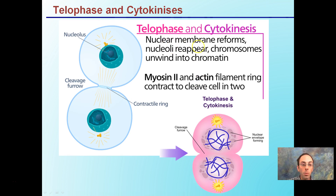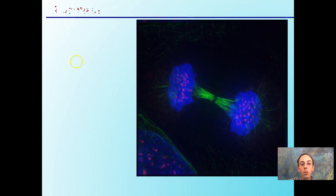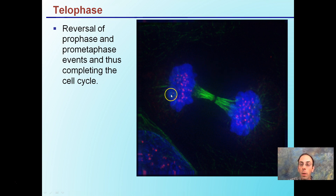Telophase and cytokinesis: the nuclear membrane reforms and nucleoli reappear. Chromosomes unwind into chromatin. Myosin-1 and actin filament rings contract to cleave the cell into two. That cleavage furrow is where the contracting ring causes the cell to pinch and ultimately break apart. Telophase is essentially a reversal of prophase and prometaphase events, completing the cell cycle, and we can visually see two separate and distinct cells forming.